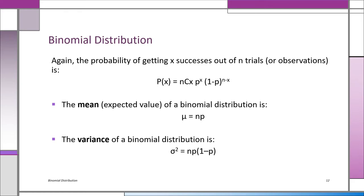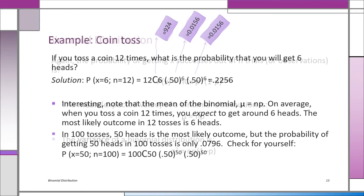Coin tossing is the classic binomial: two outcomes — head or tail — and the probability never changes, always 50%. If you toss a coin 12 times, what's the probability you'll get six heads? The expected value μ = NP = 12 × 0.5 = 6, so six heads is the most likely outcome. But many of you think the probability is 50% — it's not. Let's prove it.